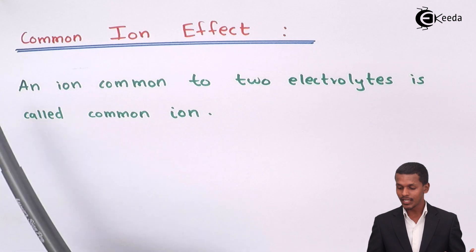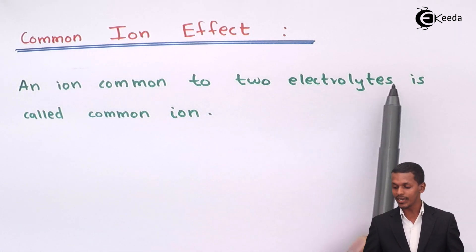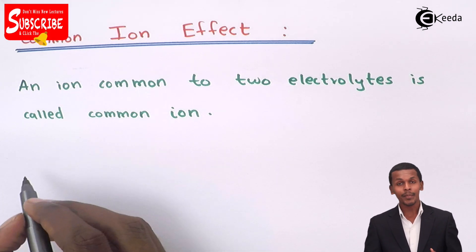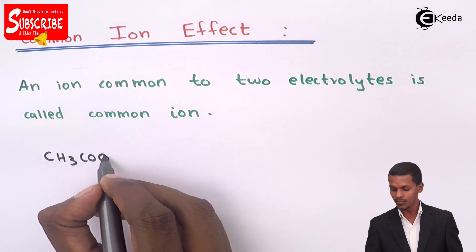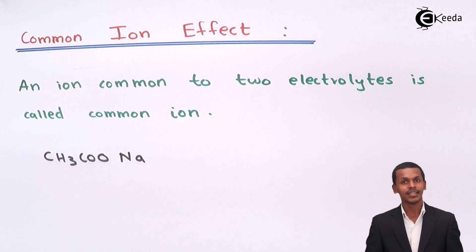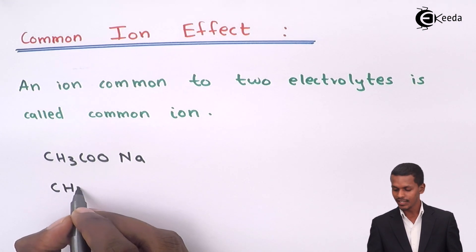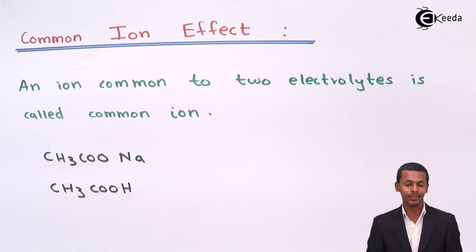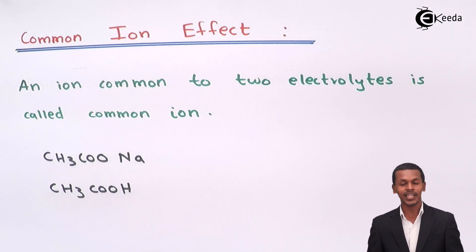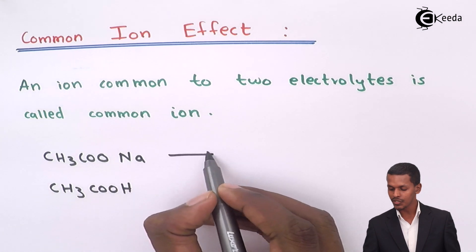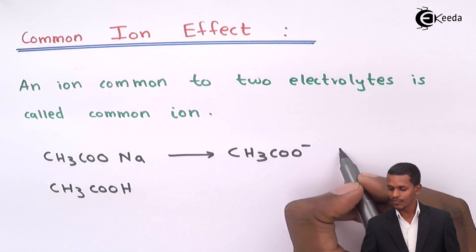So now we are going to study what is common ion effect. An ion common to two electrolytes is called a common ion. For example, if I take a strong electrolyte like CH3COONa (sodium acetate) and a weak electrolyte CH3COOH (acetic acid), one is a strong electrolyte and one is a weak electrolyte. The strong electrolyte will dissociate completely to form an acetate ion along with a sodium ion.